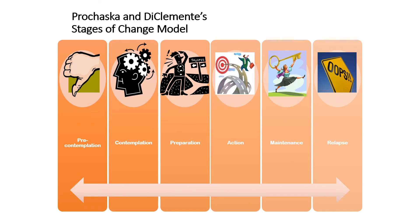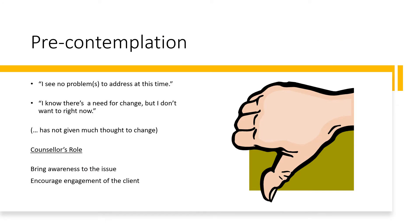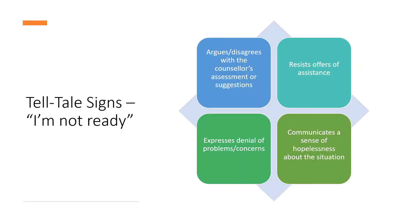We're now going to focus on the individual in the change process using Prochaska and DiClemente's stages of change model: pre-contemplation, contemplation, preparation, action, maintenance and relapse. At pre-contemplation, the person sees no problems to address - they haven't really given much thought to it. Our role is to bring awareness to the issue and encourage engagement. Telltale signs someone's not ready include arguing or disagreeing with your assessment, resistance to offers of assistance, denial of the problem, or expressing hopelessness or learned helplessness about the situation.